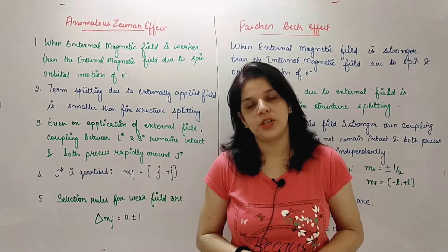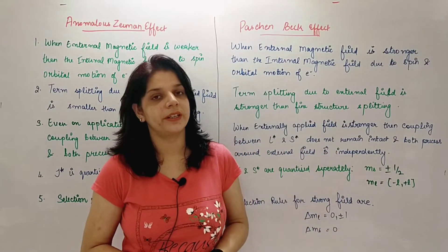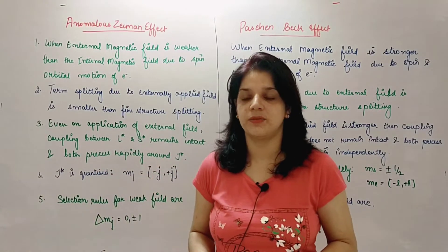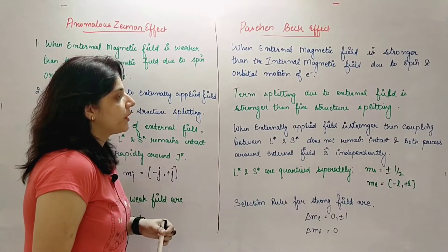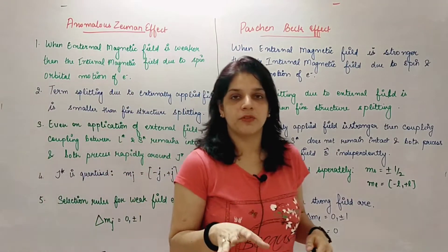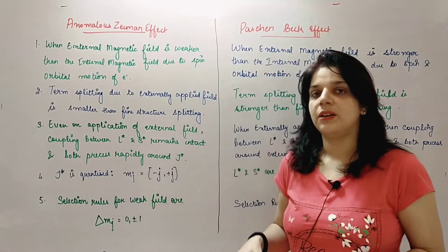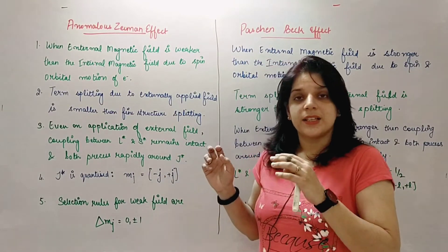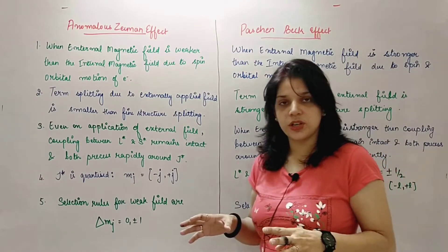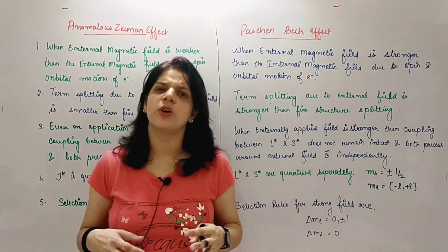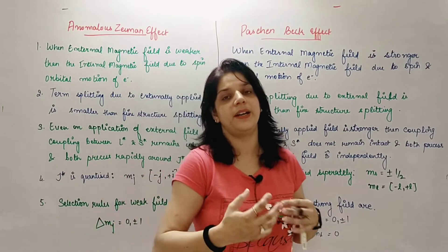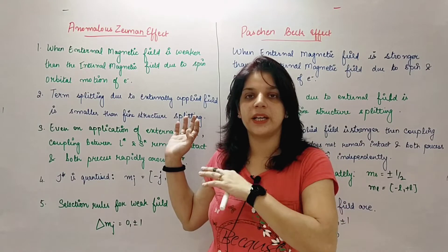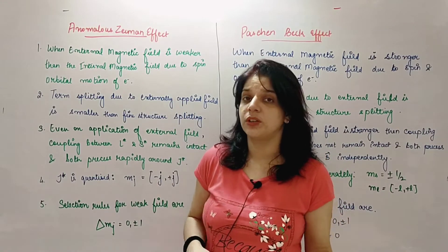So, the next question is differentiate between anomalous Zeeman effect and Paschen-Back effect. This is a very common question and it comes very repeatedly. Now, we are going to write four points, four to five points, and we'll get the idea of both the effects also. The best part is when you study differentiation questions, you get some idea about that topic itself. So when we compare two effects and differentiate, we'll get to know both the effects also.